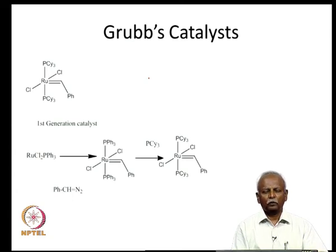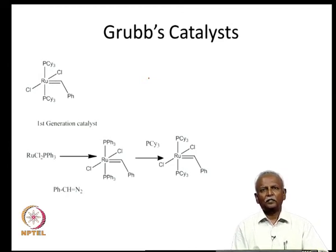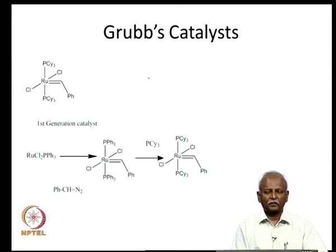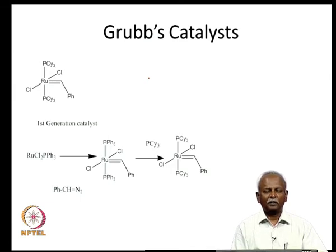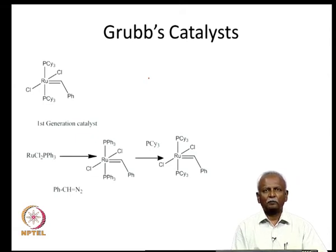The first breakthrough came from the work of Schrock and Grubbs. We will take up the Grubbs catalyst first and then talk about the Schrock catalyst. Grubbs catalyst was a modification of carbene systems derived from Fischer carbenes — species where you had a late transition metal along with a carbon bearing a heteroatom. When the heteroatom is replaced with all alkyl groups, the carbene became far more reactive and especially reactive towards metathesis.